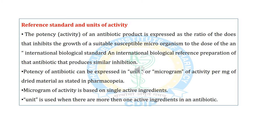Regarding preparation of reference standards and units of activity: the potency of an antibiotic product is expressed as the ratio of the dose that inhibits the growth of a suitable susceptible microorganism to the dose of an international biological standard or international biological reference preparation of that antibiotic that produces similar inhibition. The potency of an antibiotic can be expressed in units.